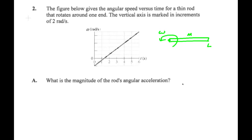It says what's the magnitude of the rod's angular acceleration? Well, the angular acceleration alpha is the slope of an angular velocity time graph. That is an omega-t graph.